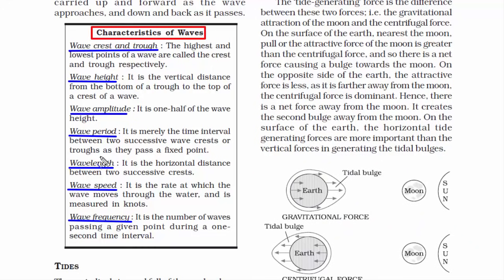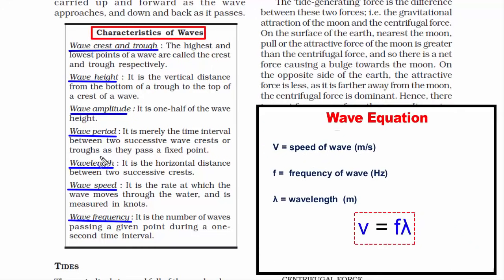Let's see how wave speed is calculated. The wave equation is: V = F × λ, where V is the speed or velocity of the wave, F is the frequency, and λ (lambda) is the wavelength. Wavelength is the distance between two crests or two troughs, and frequency is the number of waves that travel in one second. Multiply these two and you get the speed of the wave.